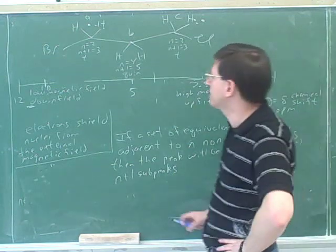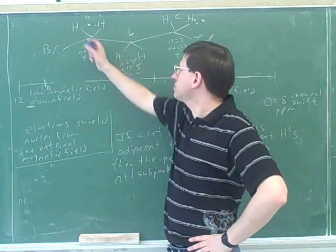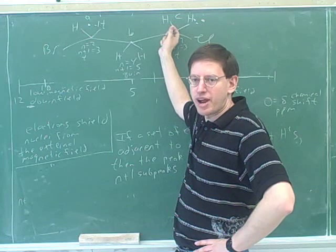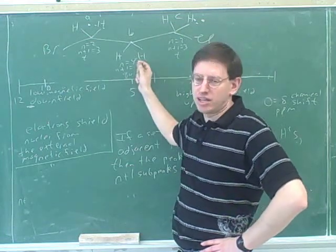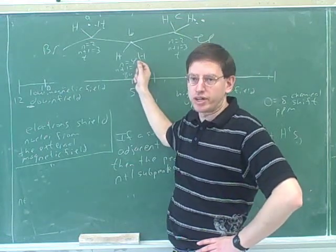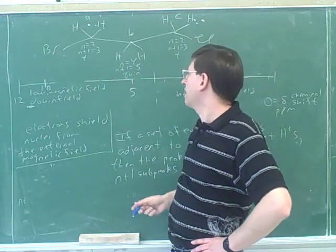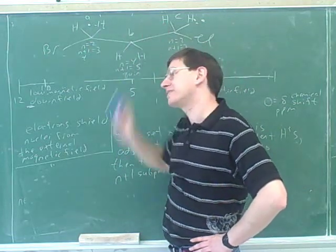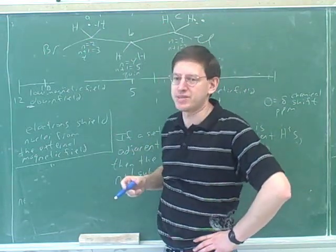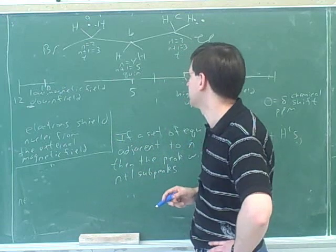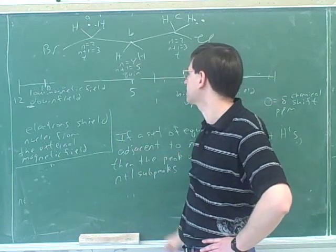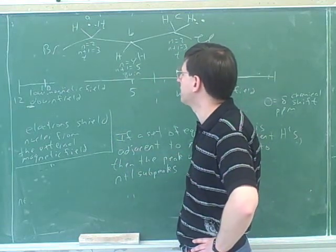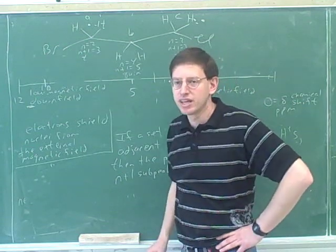Now there start to be some complications, because notice these two hydrogens on the left are not equivalent to these two hydrogens on the right. So this technique may or may not work. What we've basically done is counted all of the adjacent hydrogens as if they were the same, and sometimes that works and sometimes it doesn't. This gets into the coupling constant.